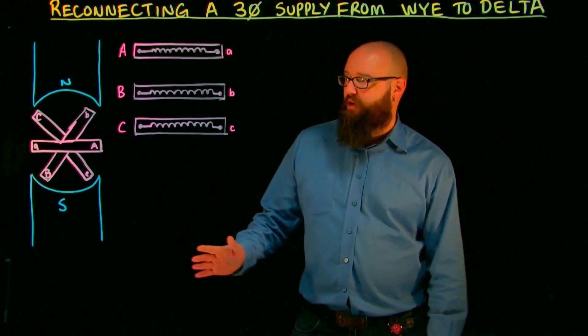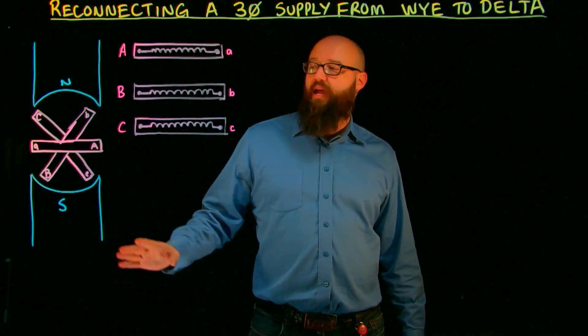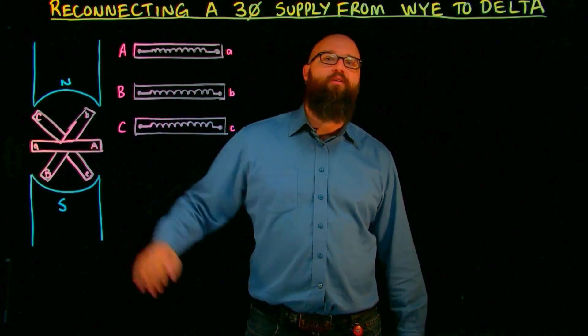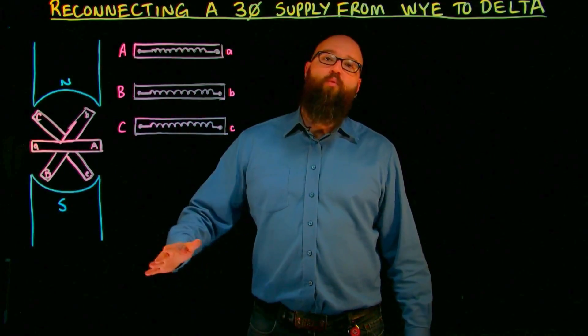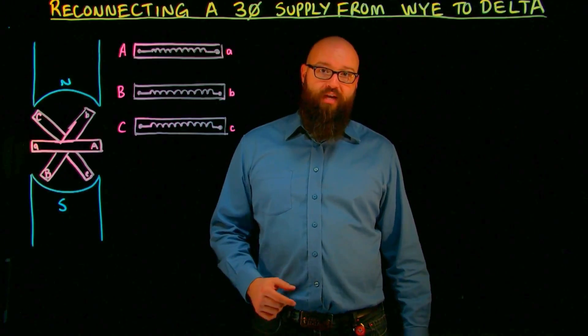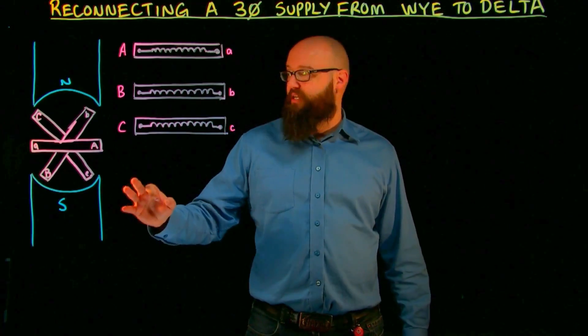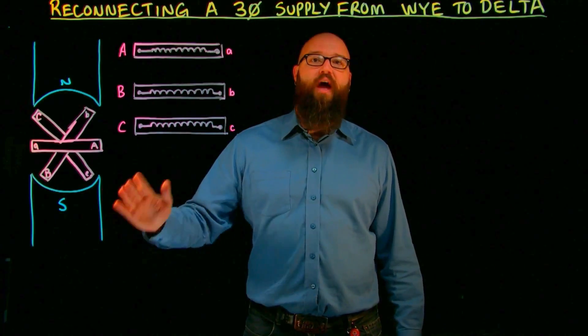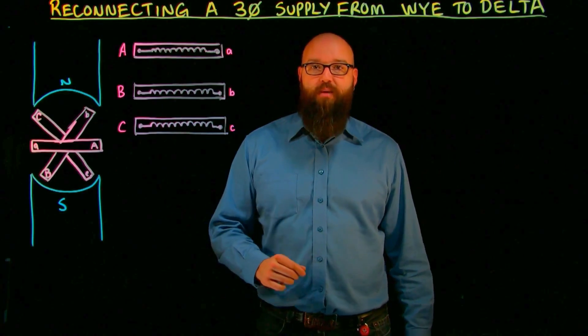First thing I want to point out is over here we have our simple three-phase generator. What I have is these three coils connected 120 degrees mechanically apart, which generates a phase voltage that is 120 electrical degrees apart as well. Now, one of the major points we need to observe with this is regardless of how these coils get connected, we are always going to generate the same phase voltage.